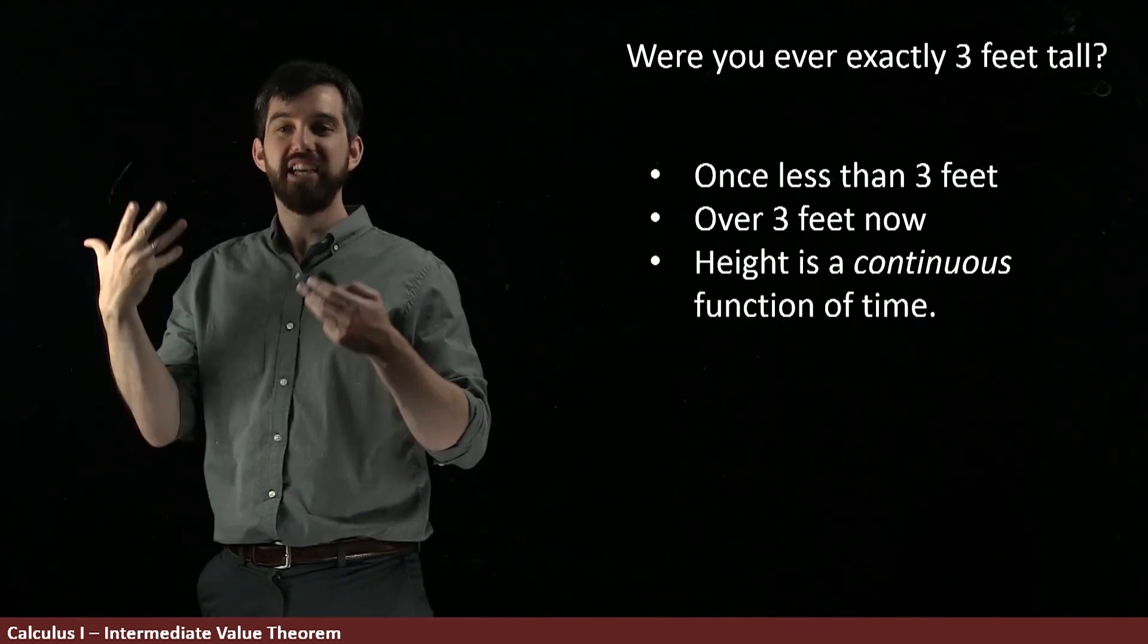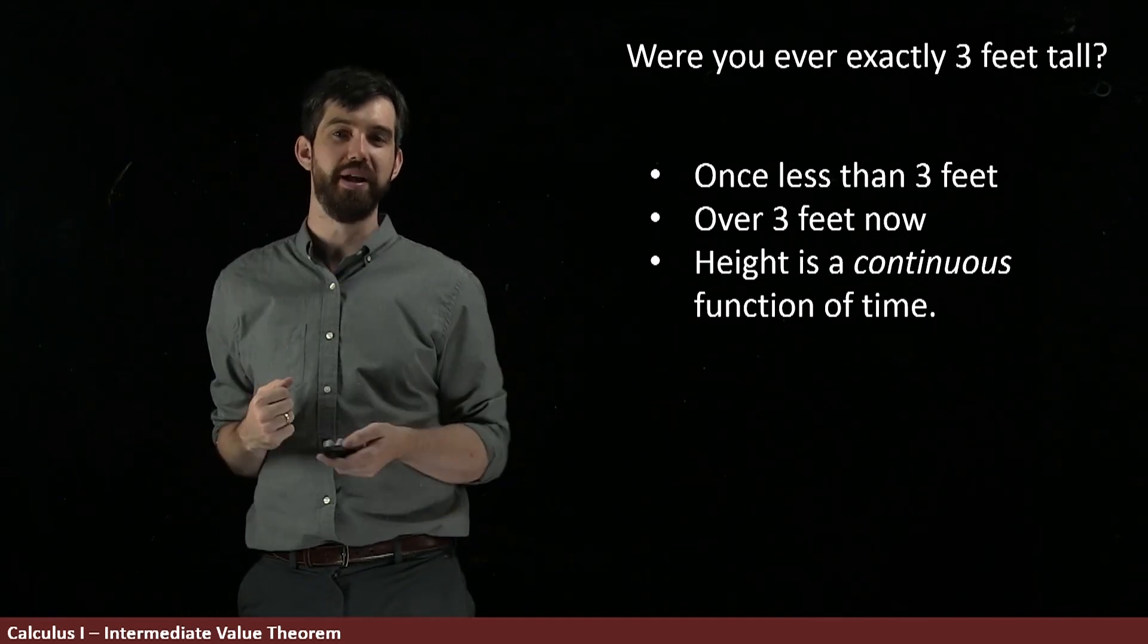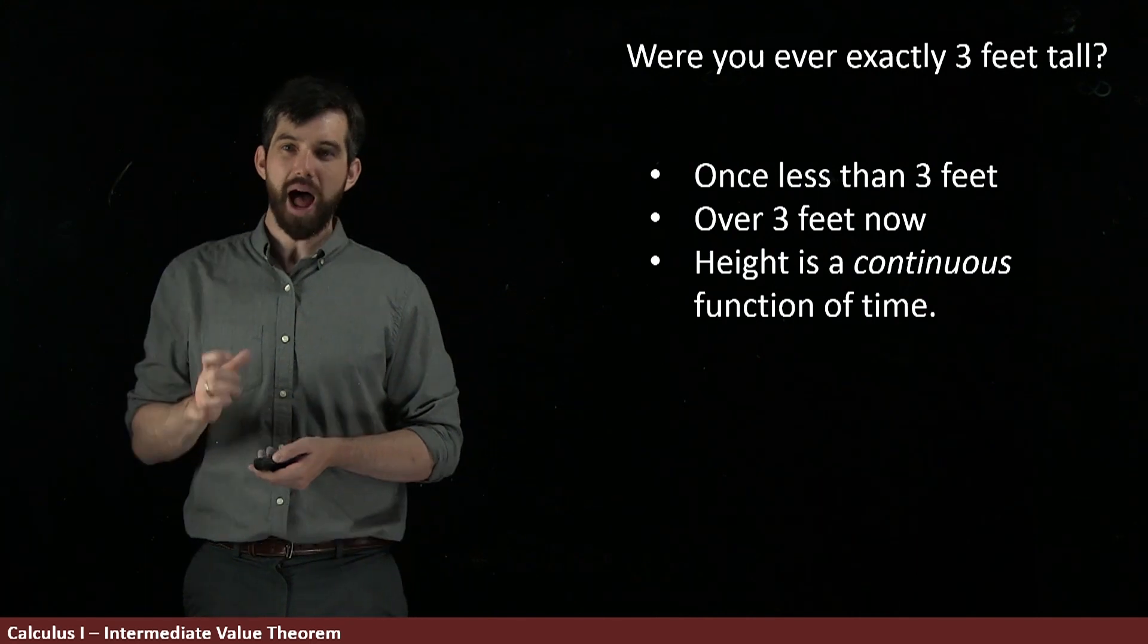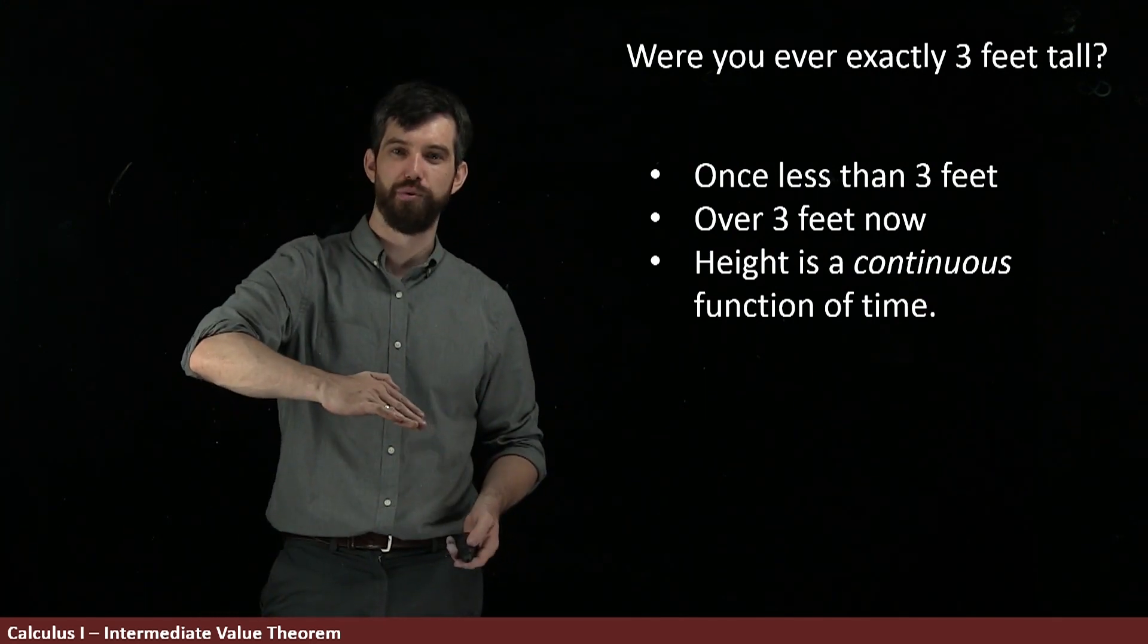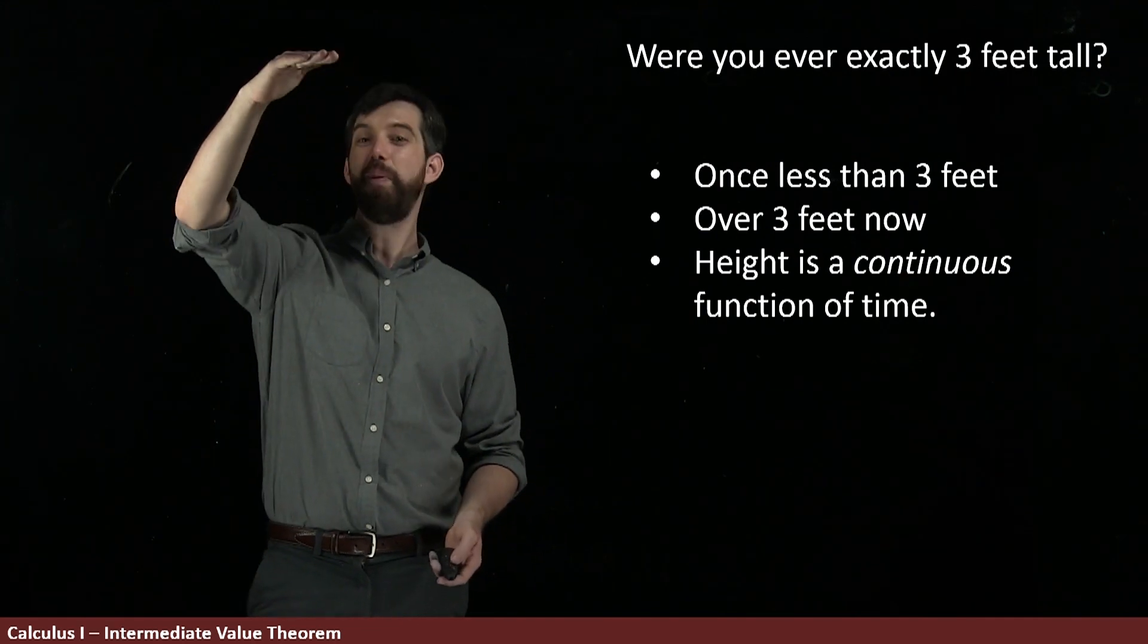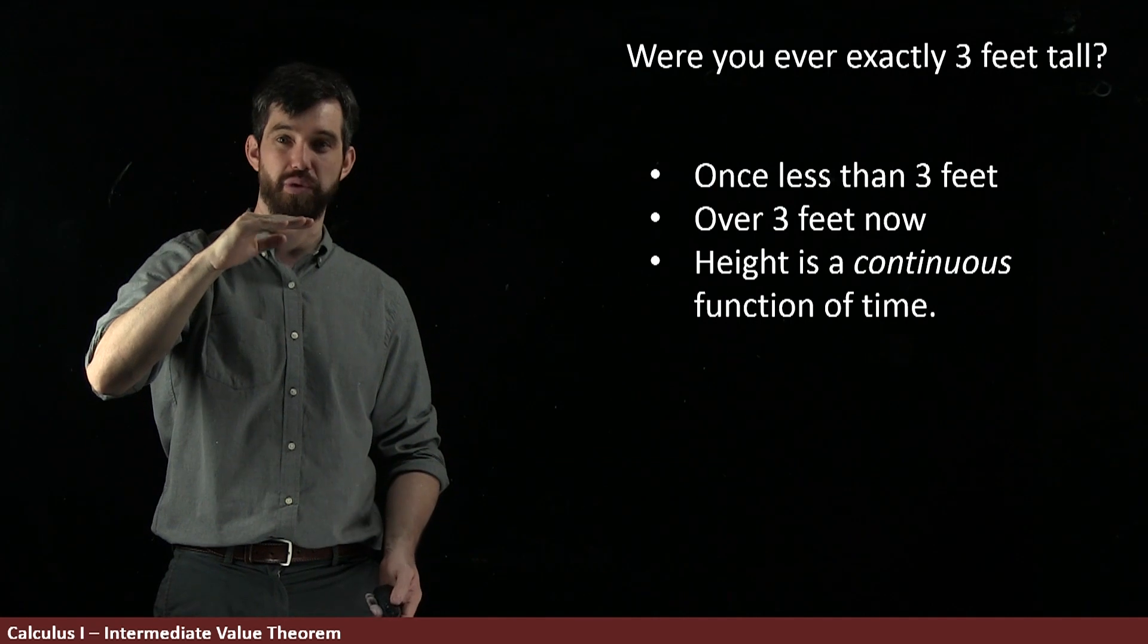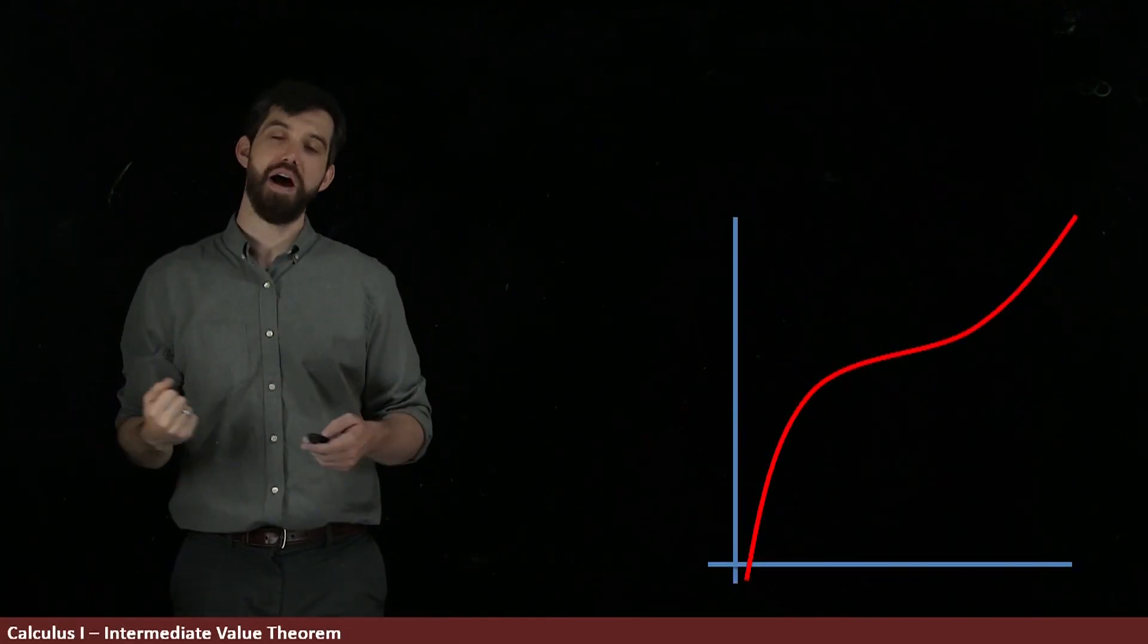So I'm going to say that height is a continuous function of time, or at least close enough that we can approximate it as a continuous function of time. So I want to make this into a theorem, this idea that if at one point you were beneath three, and at one point you were above three, and if you've got a continuous function, at one point you must be exactly three. I want to make that into a function that's going to be called the Intermediate Value Theorem.